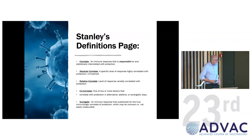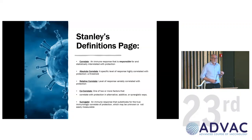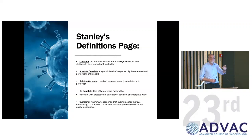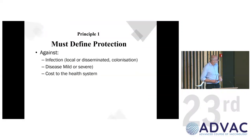Those are the two main ways in which correlates are measured. Stanley Plotkin has done a huge amount of work trying to describe and understand correlates. These are some of the definitions he put together about 25 years ago, and he's actually moved on from using these definitions now. But they're quite useful for this lecture because they help give a framework to understand why this area is so complicated, and we're going to go through some of these during the course of this talk.